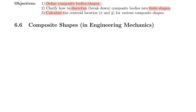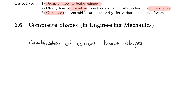A composite shape is really a combination of various known shapes — what I'd call simple shapes. Every geometric feature of these simple shapes is already known to us.